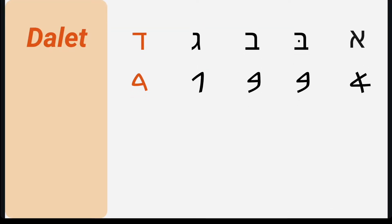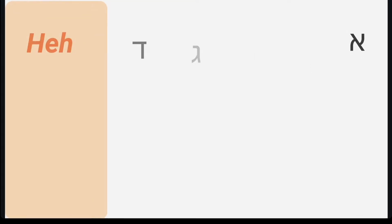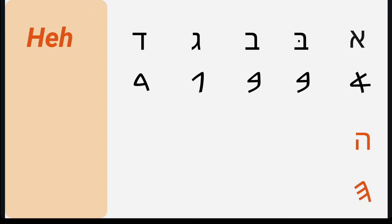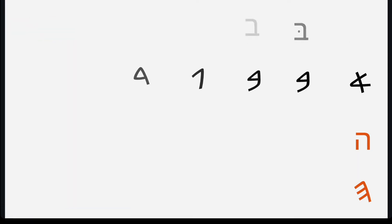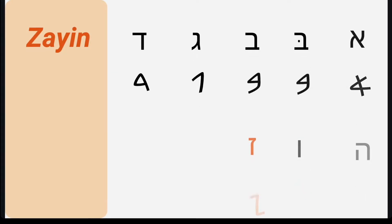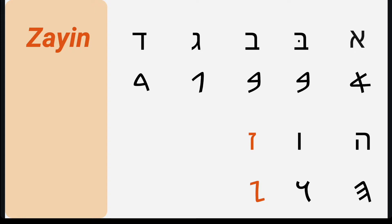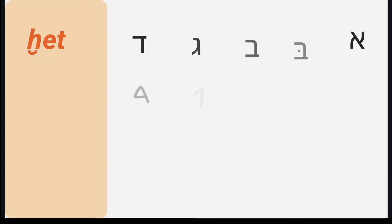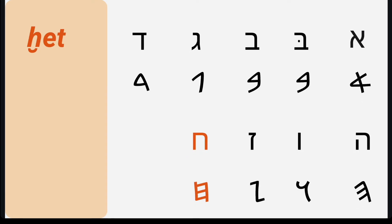That's followed by Dalet, which has the D sound like in the name 'David.' Then we have He, which makes an H sound like in 'happy.' After that is the letter Vav — when it serves as a consonant it makes the V sound like in 'victory,' but it also serves as a vowel marker for O and U sounds. That's followed by Zayin, which makes a Z sound like in 'zebra.' And that's followed by Chet, which makes that rough throat-clearing sound that we don't typically encounter in English.